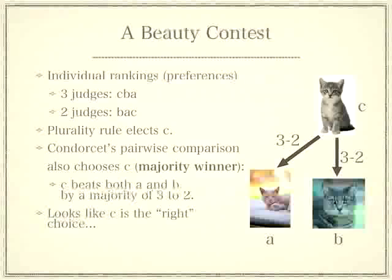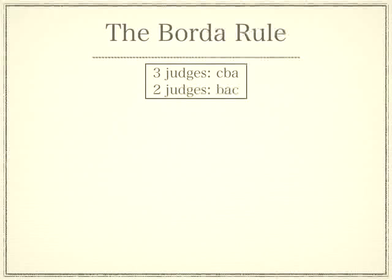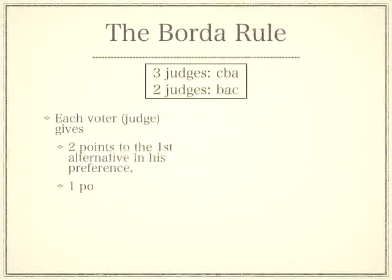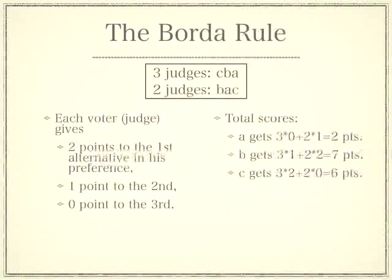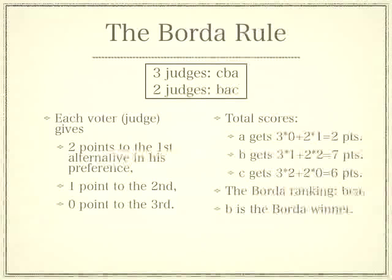Another French mathematician, Borda, didn't like the plurality rule either. When there are three alternatives, each voter reports his preference by giving two points to the first alternative, one point to the second, and zero to the third. For alternative A: three voters rank A last, giving zero points each, and two voters rank A second, giving one point each — so the total score for A is two points. Similarly, you can calculate scores for B and C. Ranking by total scores gives the Borda ranking: B first, C second, A third. So despite the fact that a majority prefers C to B, the Borda rule selects B.